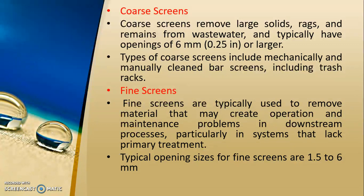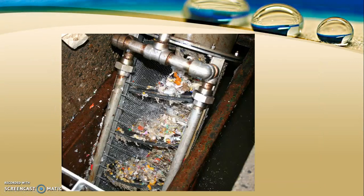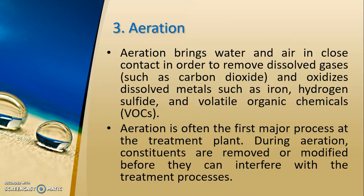Bar screens are also called trash racks. Fine screening is used to remove material that may create operation and maintenance problems in downstream processes, particularly in systems that lack primary treatment. Typical opening sizes for fine screens are smaller — 1.5 to 6 mm — compared to coarse screening. After screening, once the floating matter is removed, water then goes to the aeration process.